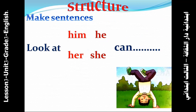Now, make a sentence. How can you make a sentence? You can look at the picture and describe it. First, say 'Look at him' or 'Look at her.' Then say what he or she can do. For example, look at this picture: Look at him. He can do a handstand.